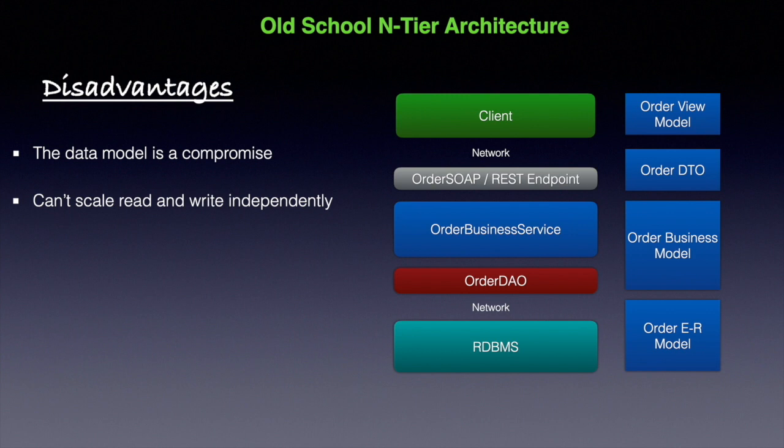For example, if an application is consuming 90% of CPU for read operations and only 10% for write operations, and you want to scale out the read part independently, you cannot do it. You have to scale at the entire application level, even if it is not necessary.